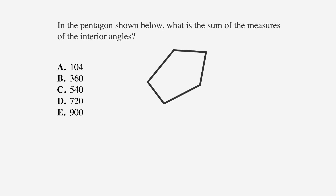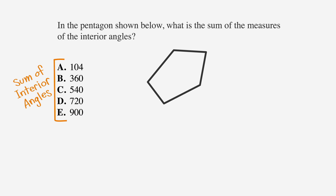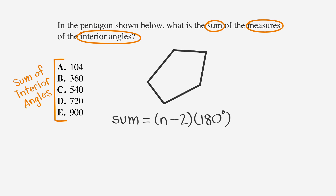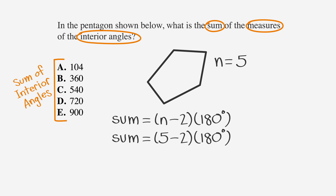Let's solve an ACT problem involving the sum of the angles of a five-sided polygon. In the pentagon shown below, what is the sum of the measures of the interior angles? The answer choices are: A) 104, B) 360, C) 540, D) 720, E) 900. We'll circle the key words: sum, measures, and interior angles. Using our formula, sum equals n minus 2 times 180 degrees, with n equal to 5, we get 5 minus 2 times 180, which equals 540 degrees — choice C.